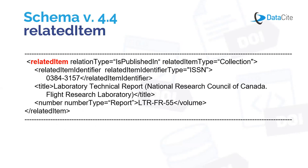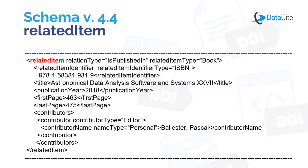This example shows how related item can be used to provide metadata about a report series — the described resource is a report published in a series with a series number. Another example: the described resource is a book chapter published in a book. The subproperties include the publication information related to the book, and it includes editor, which is indicated in the contributor subproperty.